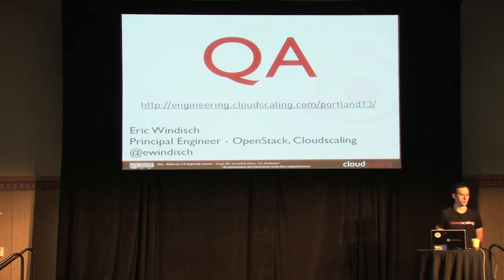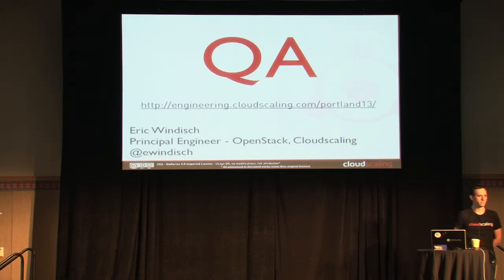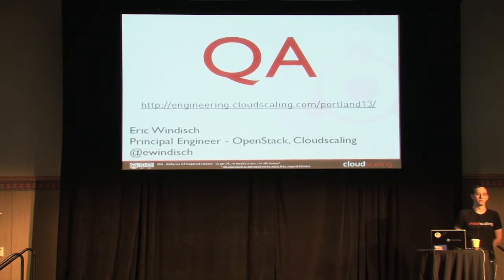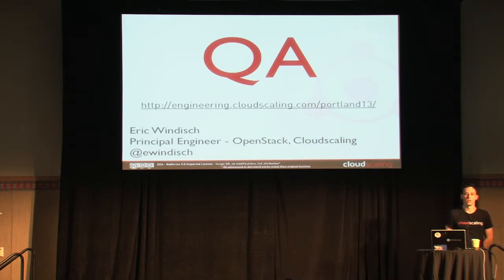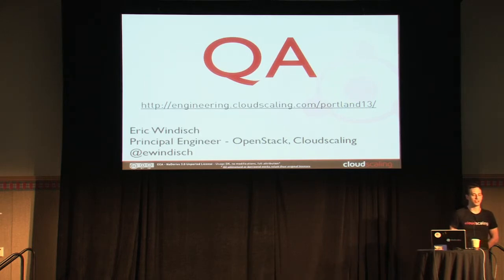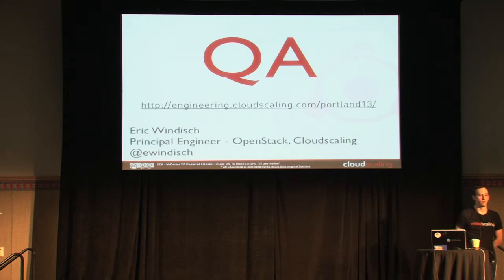Q: If you're only keeping one copy of the data, how do you handle downtime and upgrades — when you need to take out a storage node? A: We try to avoid upgrades if we can. You can upgrade the control plane pretty painlessly without affecting the backend storage. If you have to update the backend storage, you could bring a node down and back up, and through proper management of timeouts and configuration — we're using iSCSI for transport — if you configure it correctly, it can actually survive a fairly quick reboot. But the reality is we can actually do most of our upgrades without reboots and without bringing things down in a drastic manner.